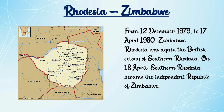Next is Rhodesia. It's spelled R-H-O-D-E-S-I-A. Rhodesia is the old name of Zimbabwe. Now it's Zimbabwe. Z-I-M-B-A-B-W-E. Zimbabwe is the new name of Rhodesia.